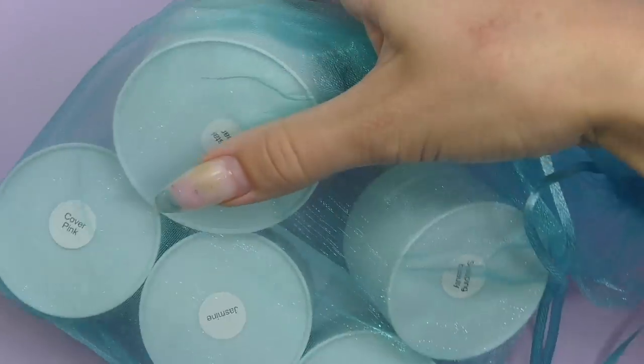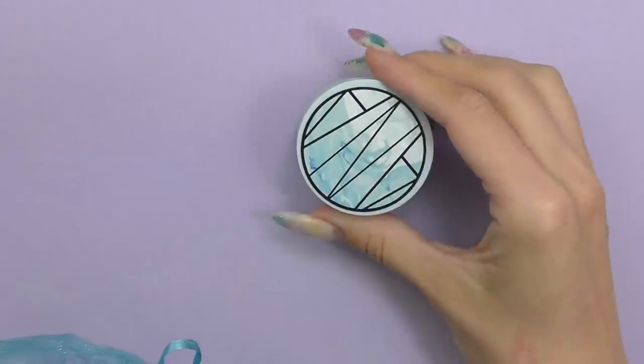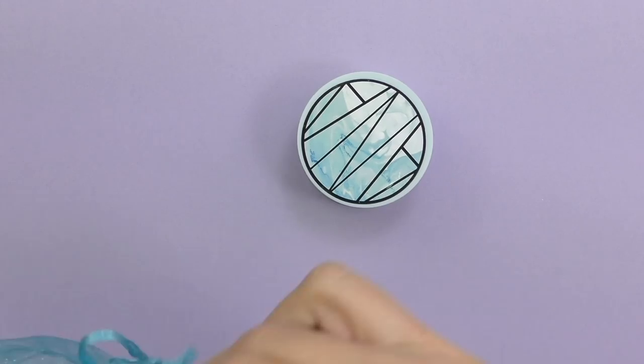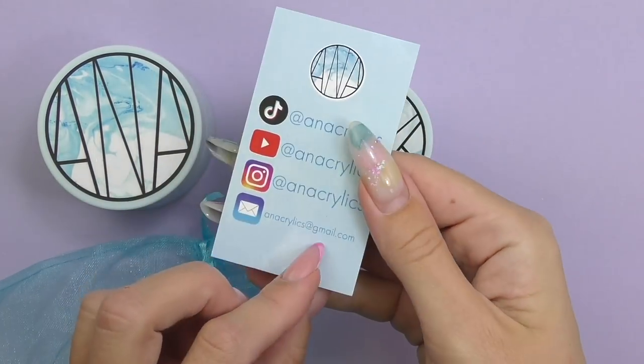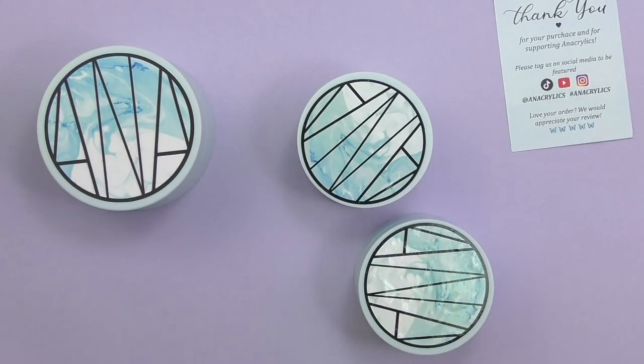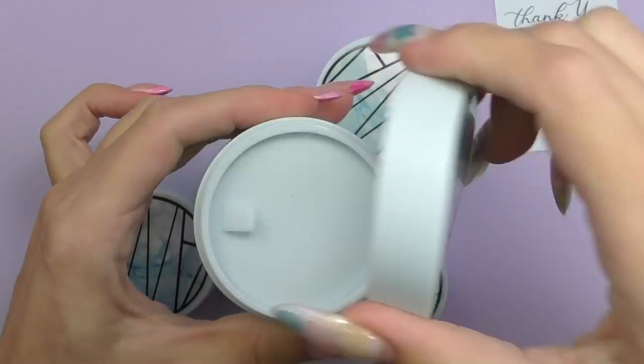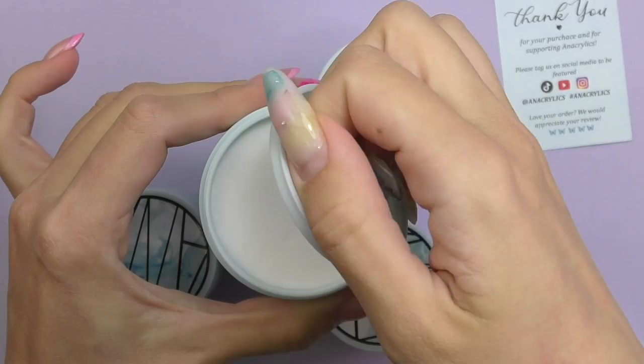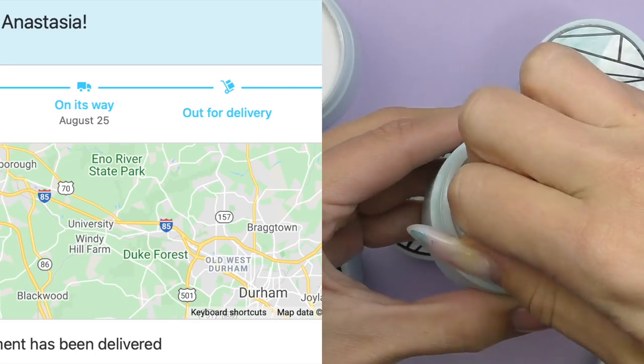Hello guys, I'm Anastasia and finally I have my Anacrylix order delivered. It took me quite a while because I missed a couple restocks, I just didn't notice the email, so they were out of stock again, but finally I did order it. I have five acrylic powders total. It took nine days from the day I ordered till it got delivered to North Carolina.